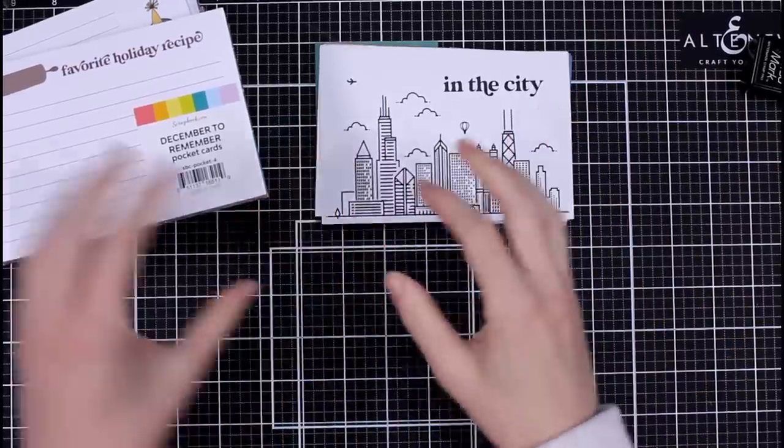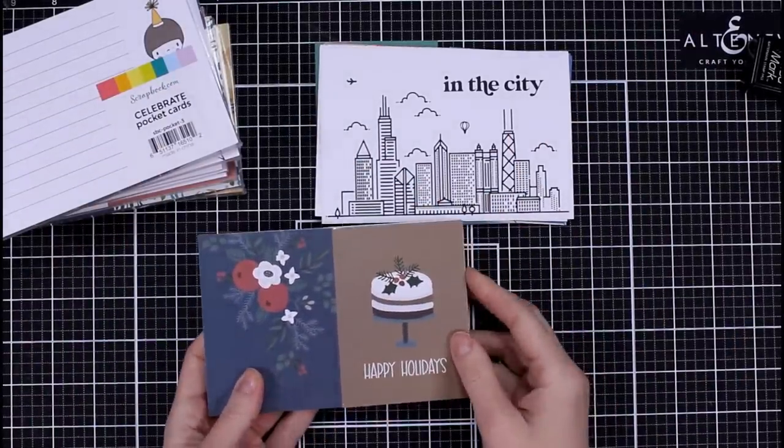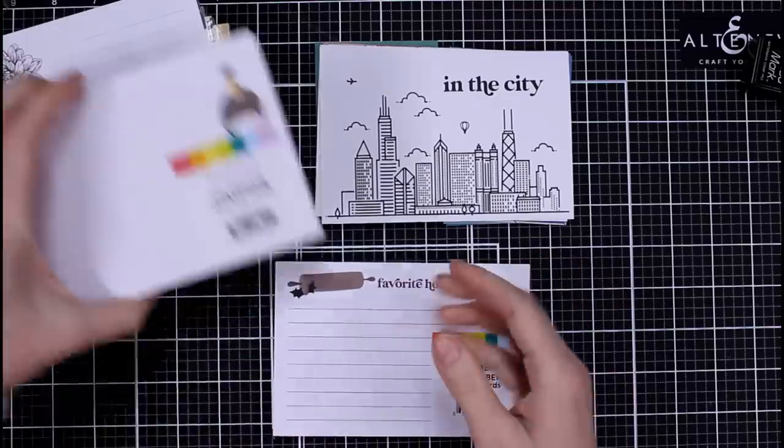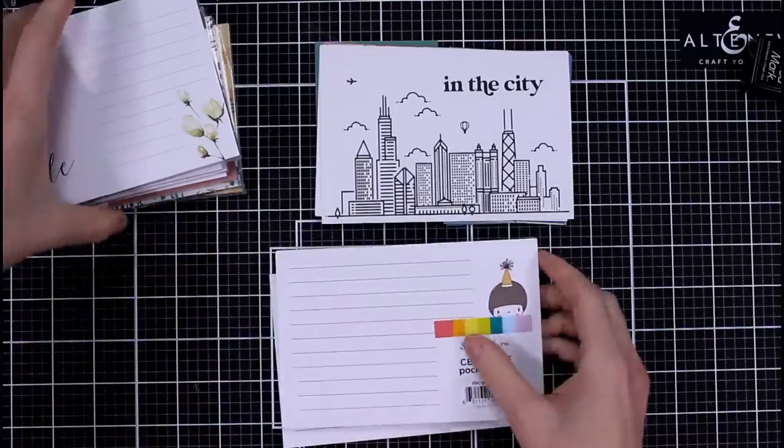This one is Celebrate the Bride. These are journaling pockets, so they go horizontal and vertical, which I think is so awesome.